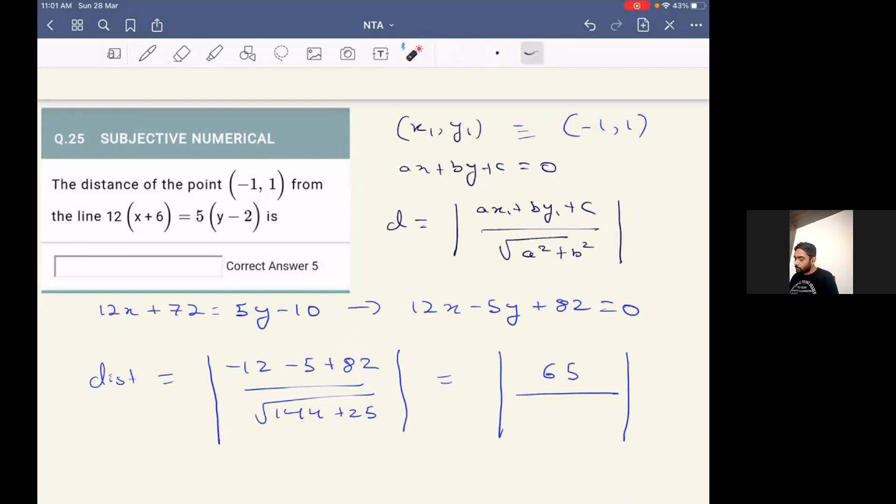Similarly, 144 plus 25 is 169, and that is a square of 13. This part will come out to be 13. So we can clearly see 65 by 13 will be 5. So 5 will be the correct answer.